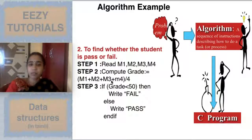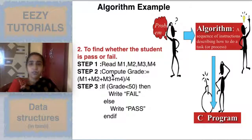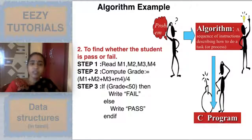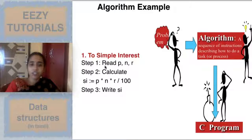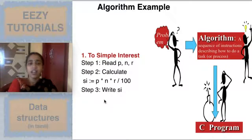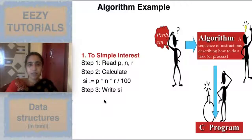Always start with input and end with output; the process steps go in the middle. This is how you write an algorithm. In the next lecture series we will be seeing how to write pseudocode, where instead of written statements we can use symbols to express the logic in a better way. Stay tuned to Easy Tutorials — like, share, and subscribe. Thanks for watching.